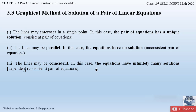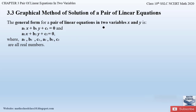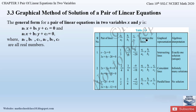The general form of a pair of linear equations in two variables x and y is: a1·x plus b1·y plus c1 equals 0, and a2·x plus b2·y plus c2 equals 0, where a1, b1, c1, a2, b2, c2 are real numbers. Using these coefficients we can determine algebraically whether the given two equations have a unique solution, no solution, or infinitely many solutions.